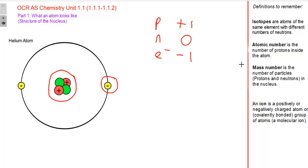Definition to remember here is the atomic number, and that is the number of protons inside the atom. Mass number is the number of particles, protons and neutrons combined, in the nucleus.